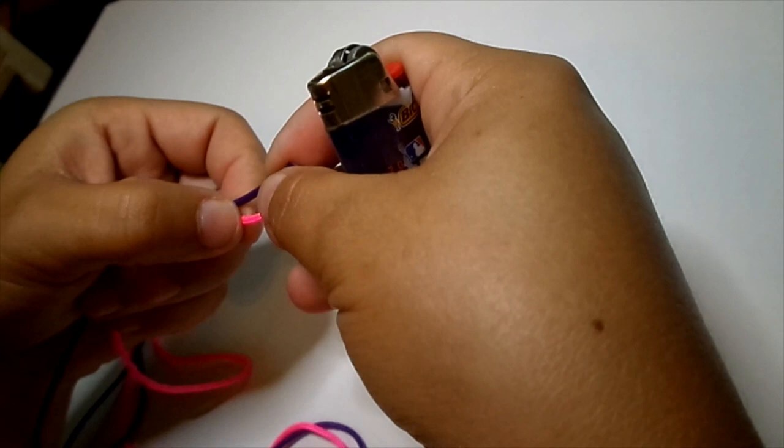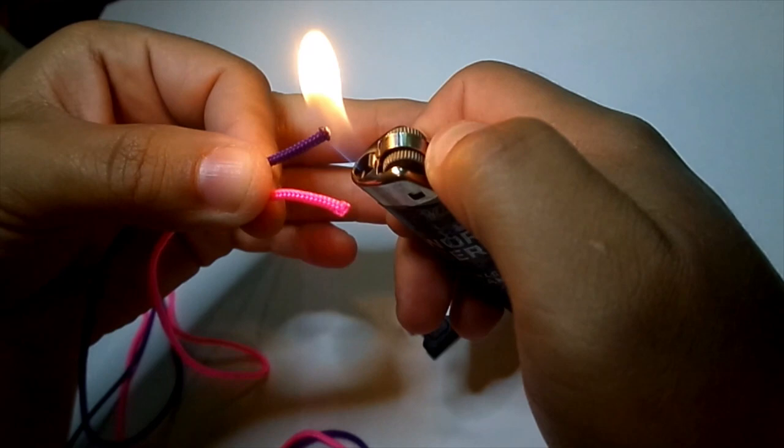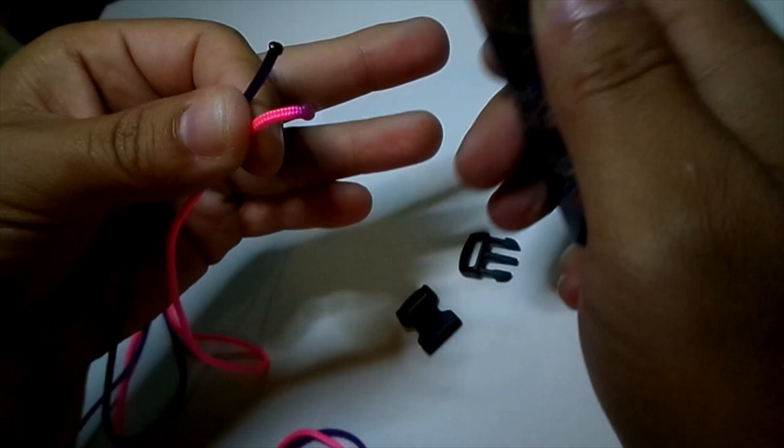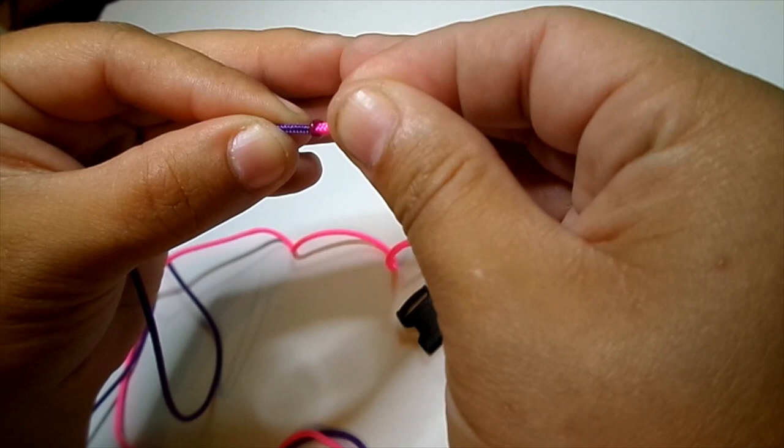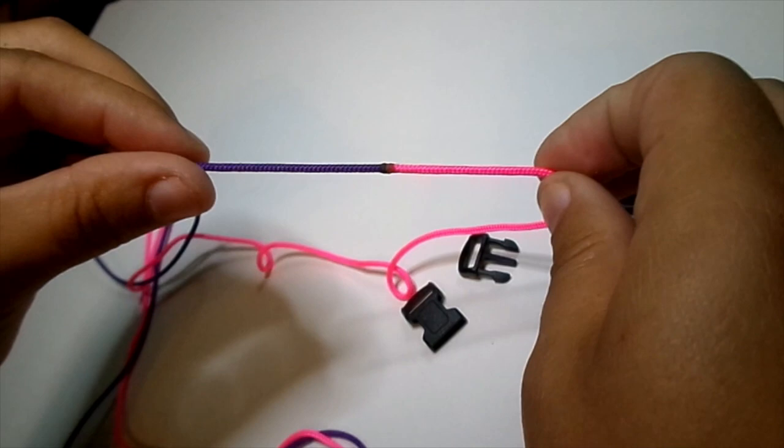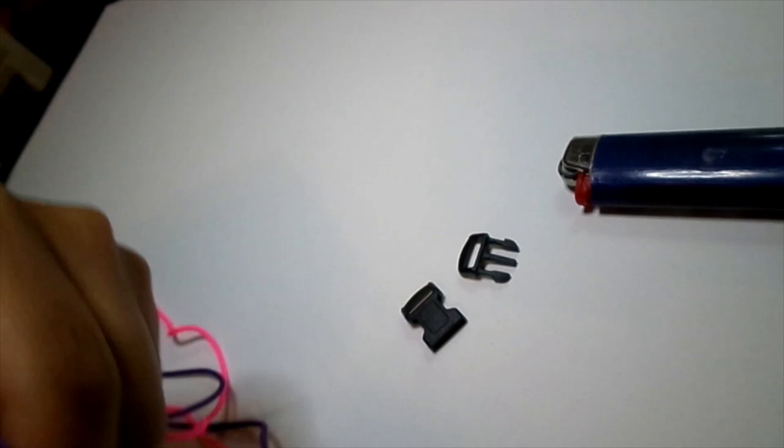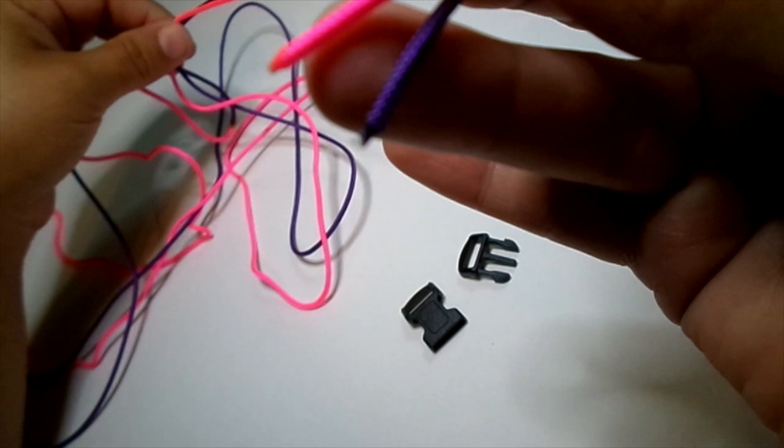First step, we want to go ahead and take our two pieces here and fuse them together into one. Just roll this out between your fingers quickly, careful not to burn yourself. I already took my other ends here and I also did the same thing. I sealed them.